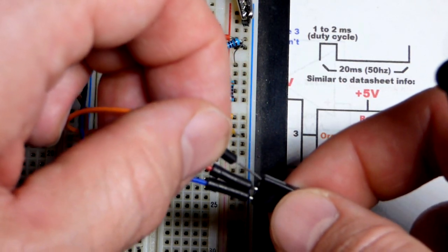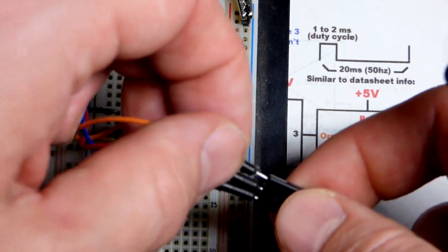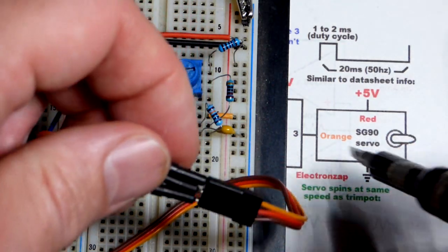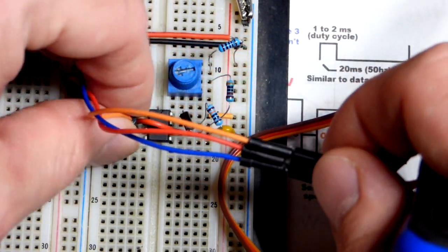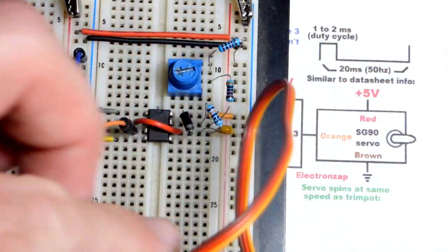Our signal is the orange one here and that's coming from the 555 timer. So hopefully you can see we got our supply pins there and our signal from the 555 timer.